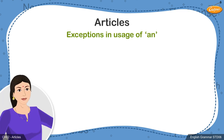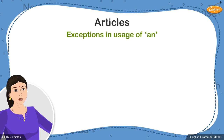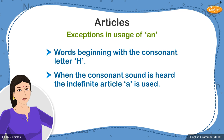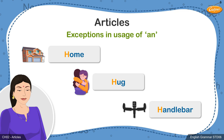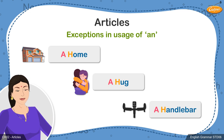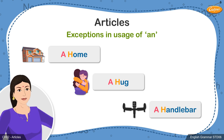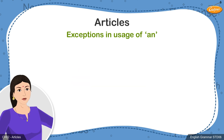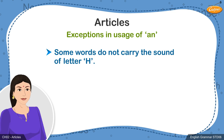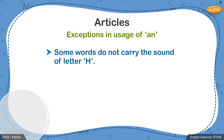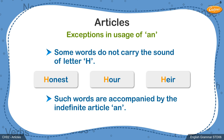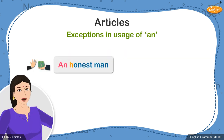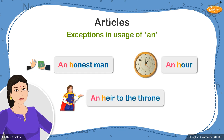However, there are some exceptions to the usage of this article. The main exception is words beginning with the consonant letter h. Some words that begin with h, like home, hug, handlebar, would all use the article a before them — a home, a hug, and a handlebar. However, some words in English begin with the consonant letter h but do not carry the sound of the letter. When words like honest or heir are spoken aloud, the h remains silent. Such words are accompanied by the indefinite article an — an honest man, an heir, and an heir to the throne.